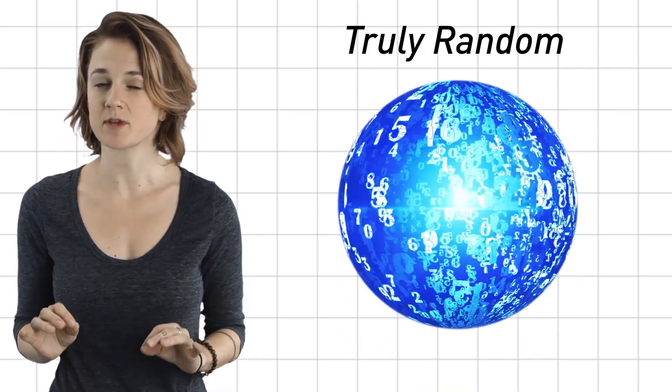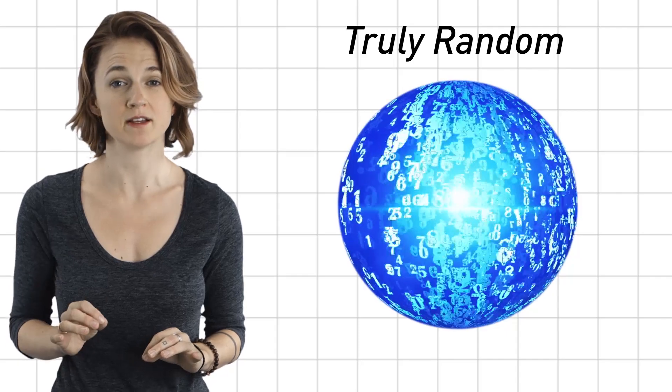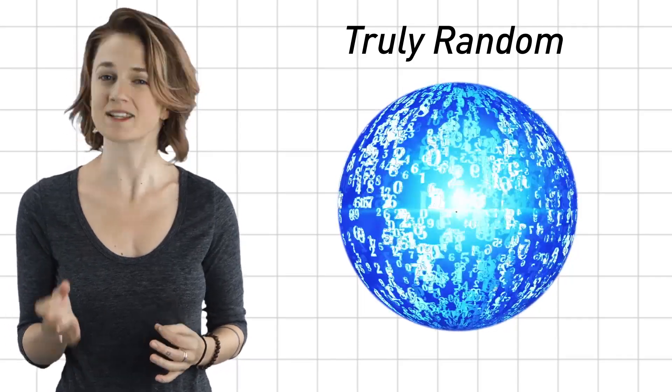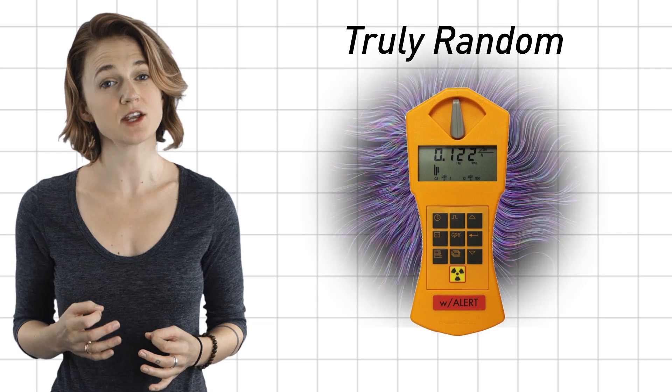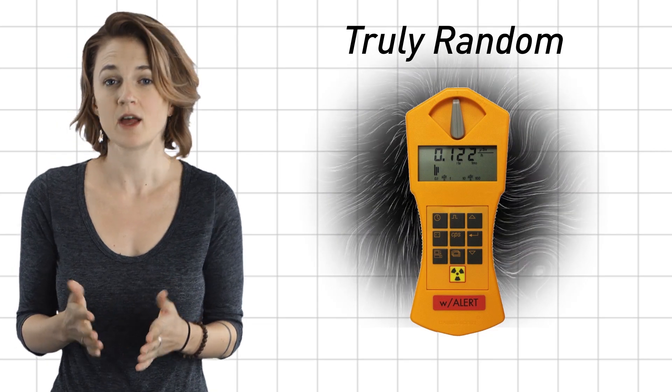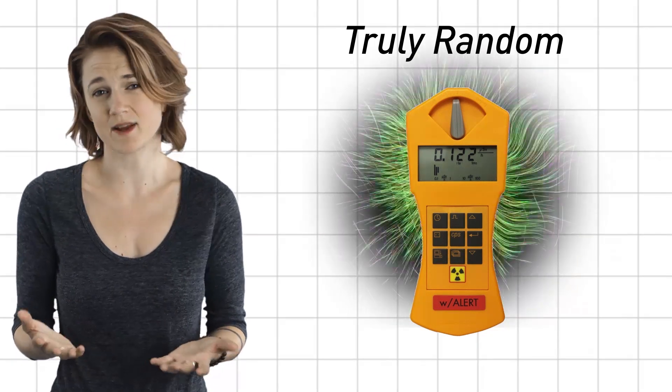Random number generators typically measure some random physical phenomenon using an extra piece of hardware, like a Geiger counter, which tabulates background radiation over a short period of time. The sequence will be random because radiation is.